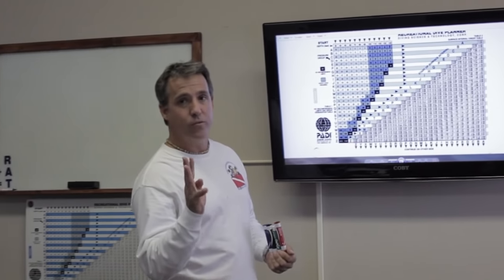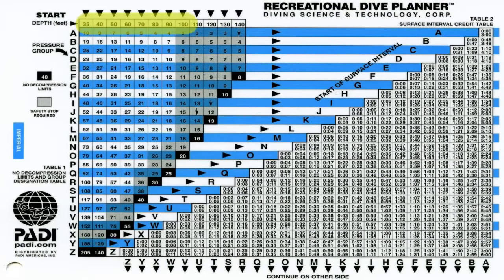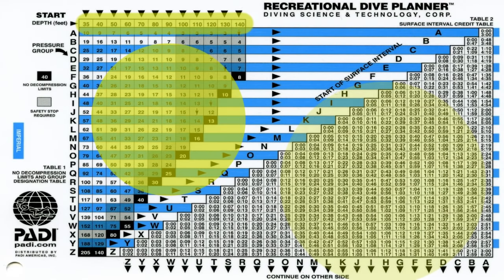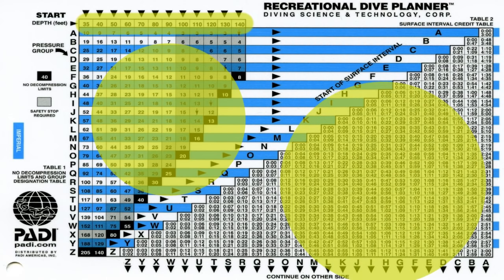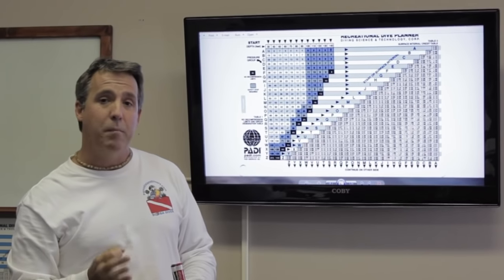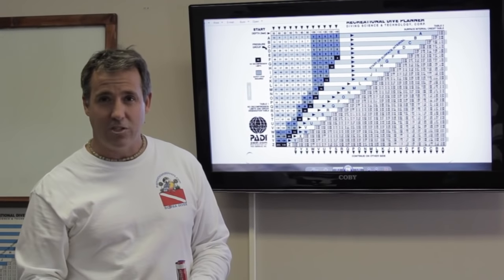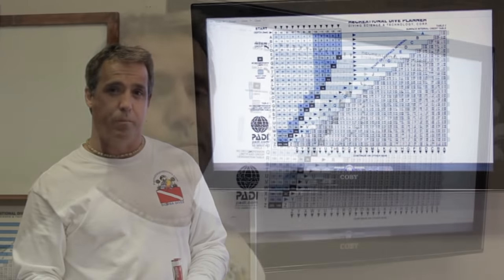PADI dive tables are four parts. First part is how deep you're going. Second part is how long you're staying down. Third part is your surface interval — this is how long you've stayed out of the water between two dives. Fourth part is the most important: that is your pressure group. You need to know your pressure group because you have to keep up with how much nitrogen is in you left over from your last dive. That's called residual nitrogen.